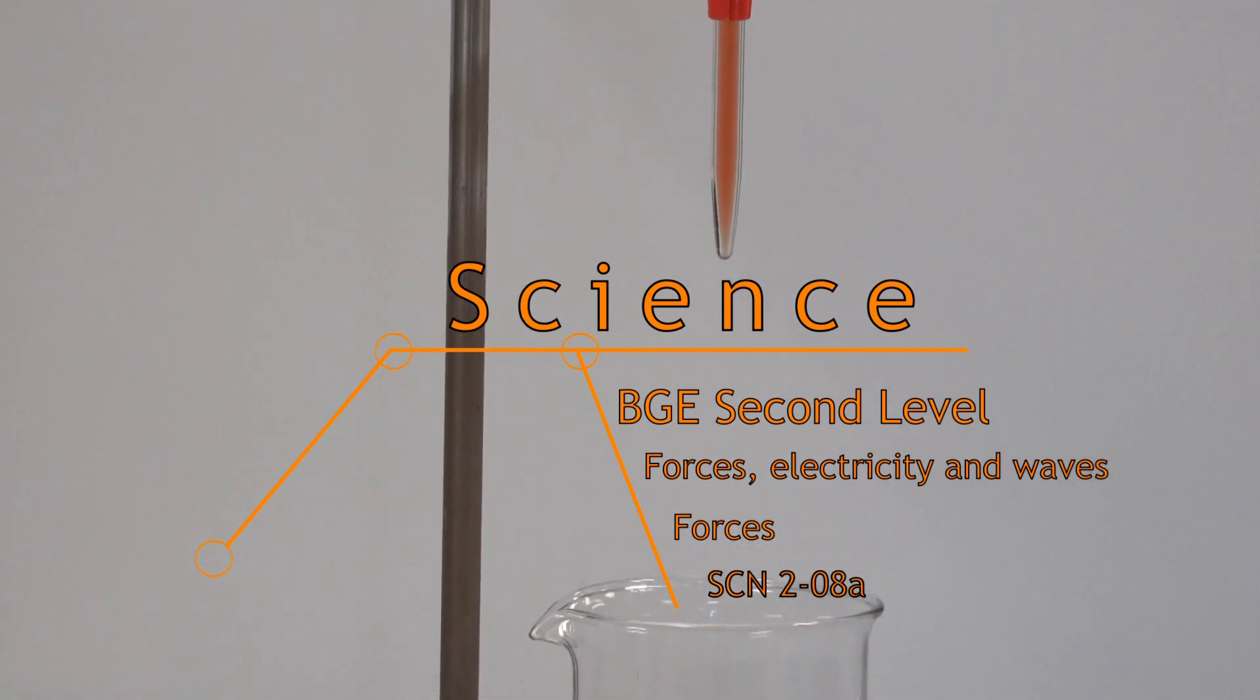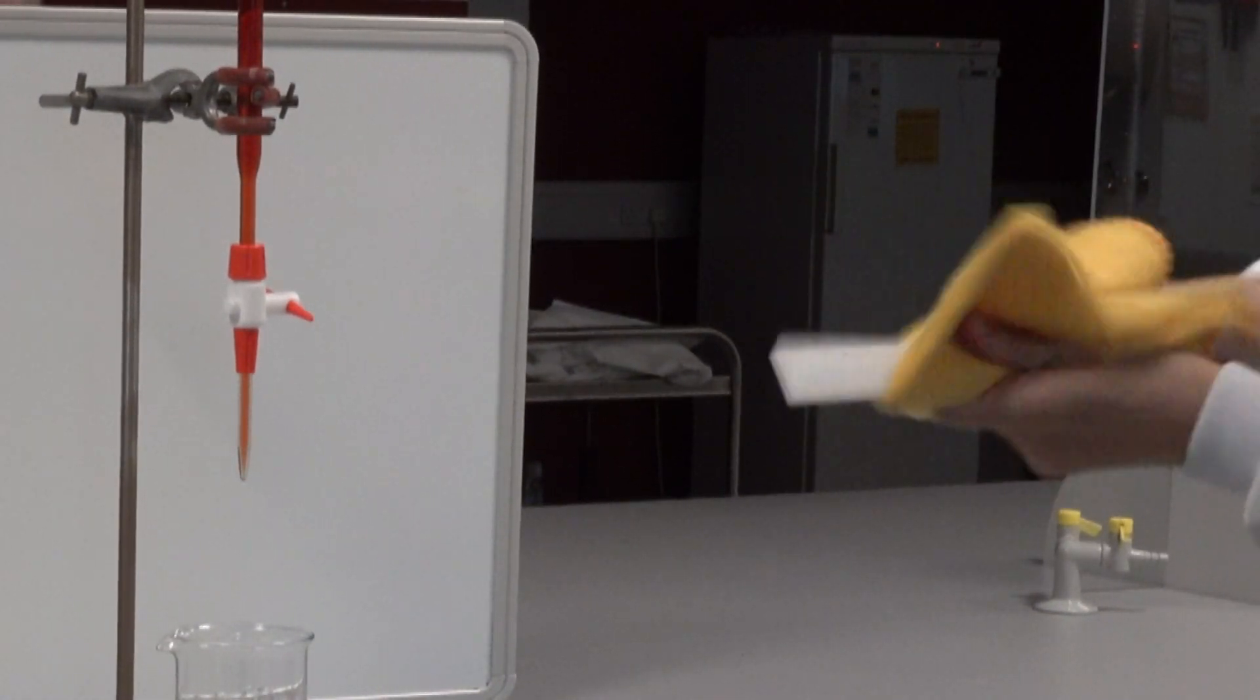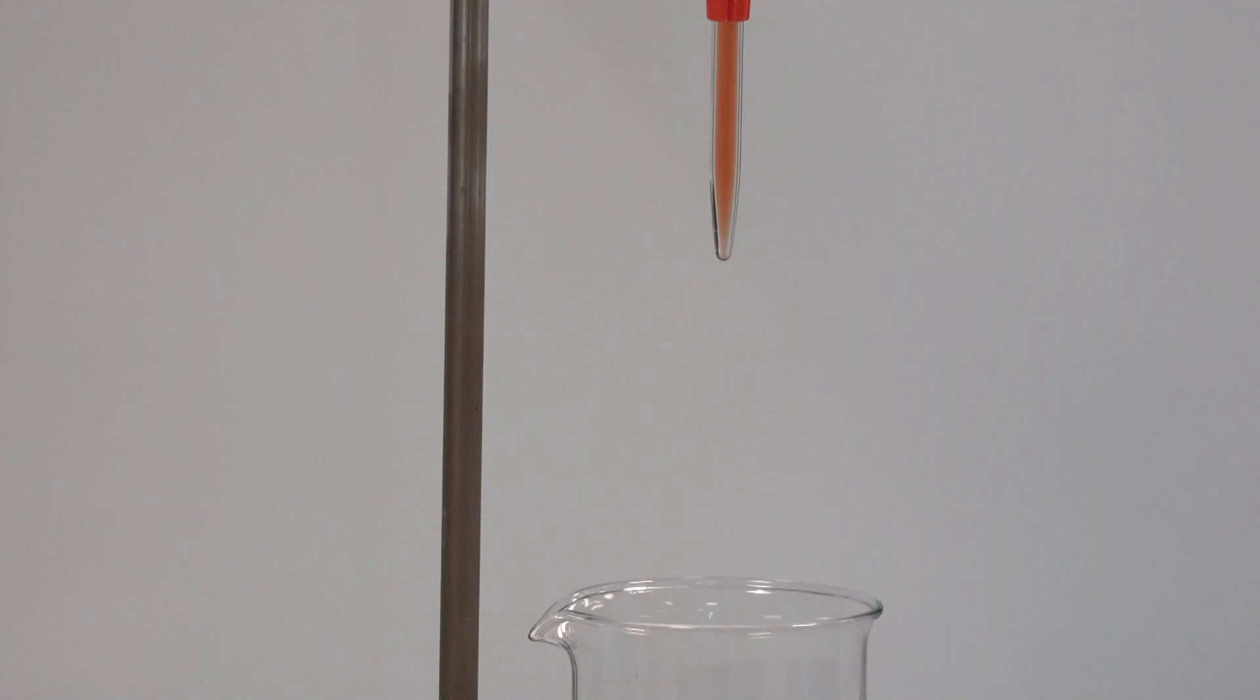In this experiment we are going to look at the effect of a charged rod on a stream of water. We can charge a polythene rod by rubbing it with a duster, removing electrons from the polythene rod to leave it positively charged. The particles in water are also charged.